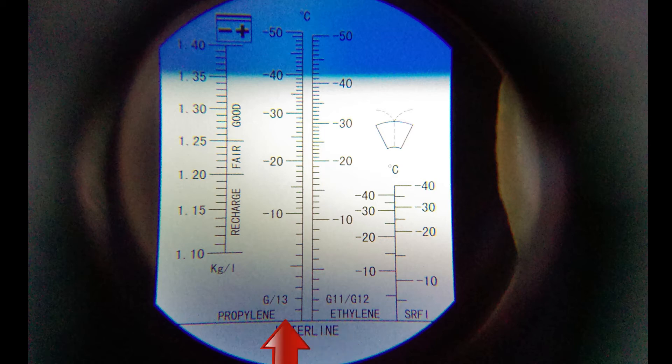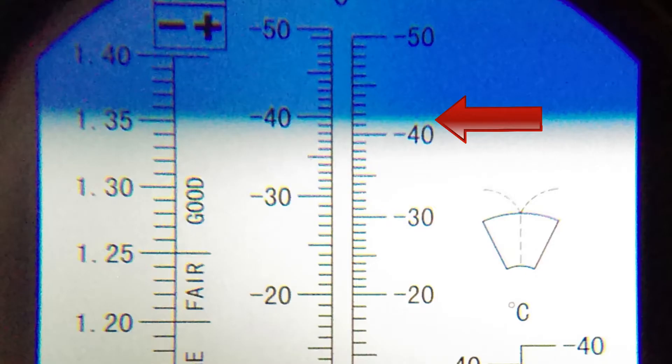If yours is propylene, use the left side of the center scale. See too that the blue and white now meet at minus 41 Celsius rather than at the waterline. This proves that my engine coolant won't freeze until minus 41.